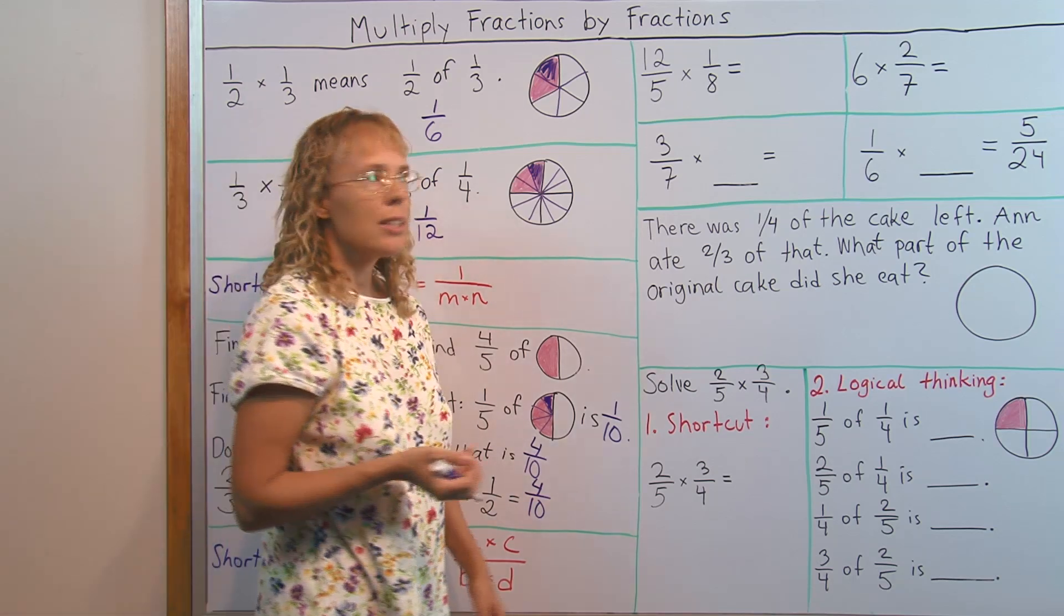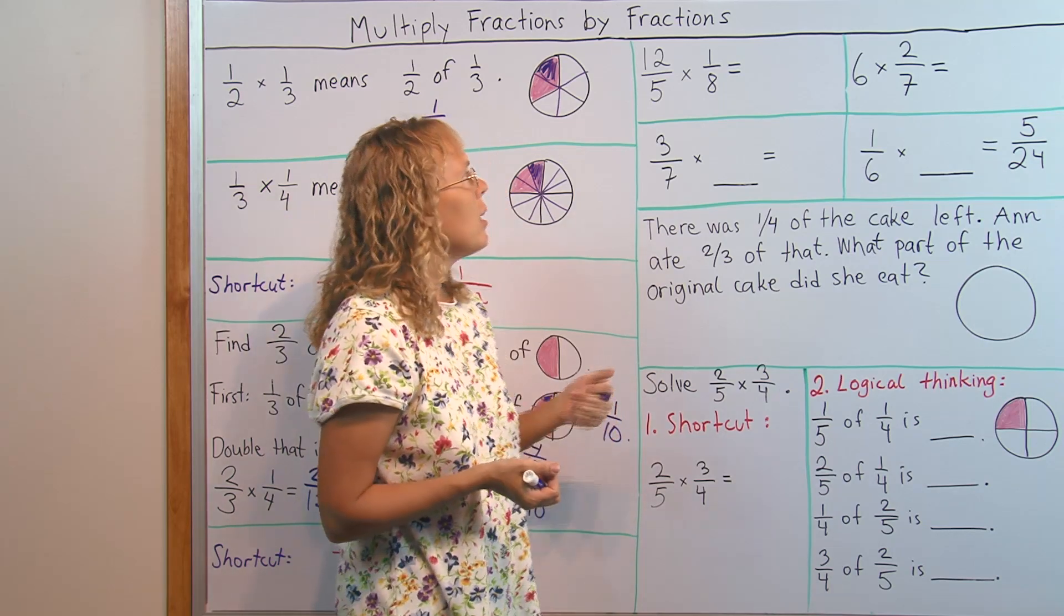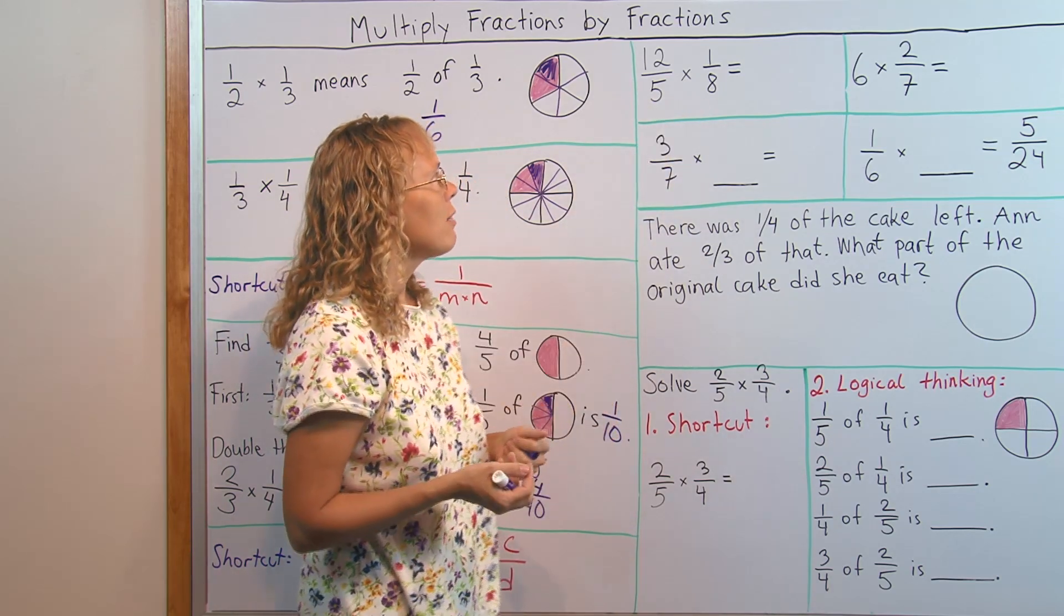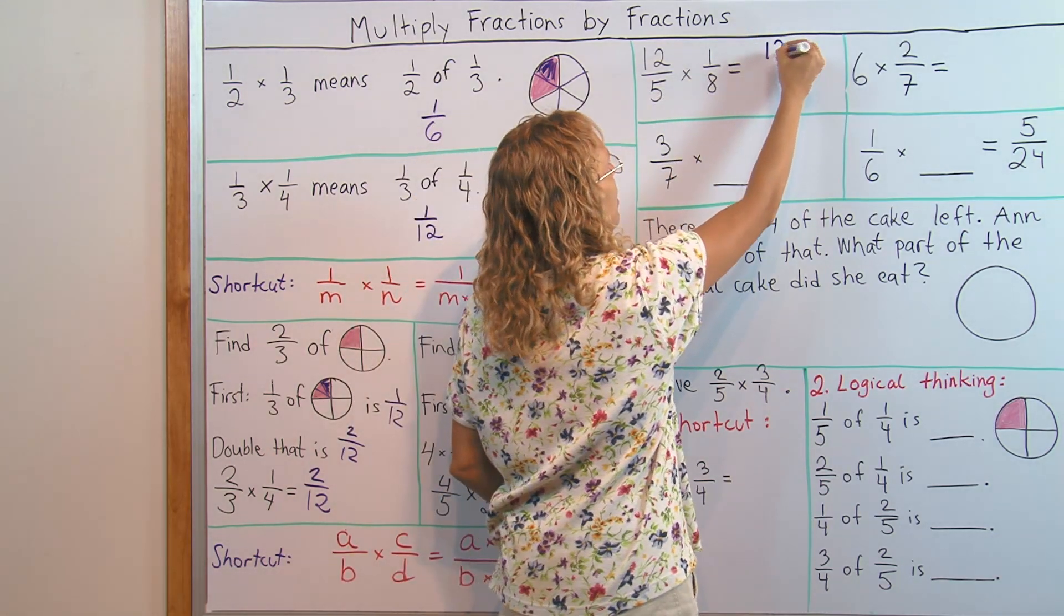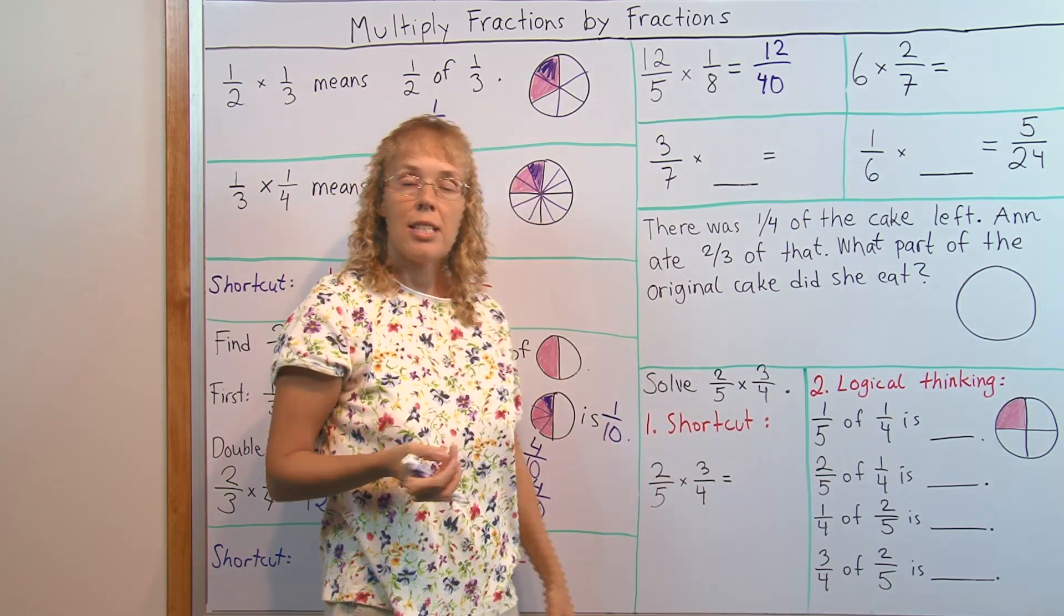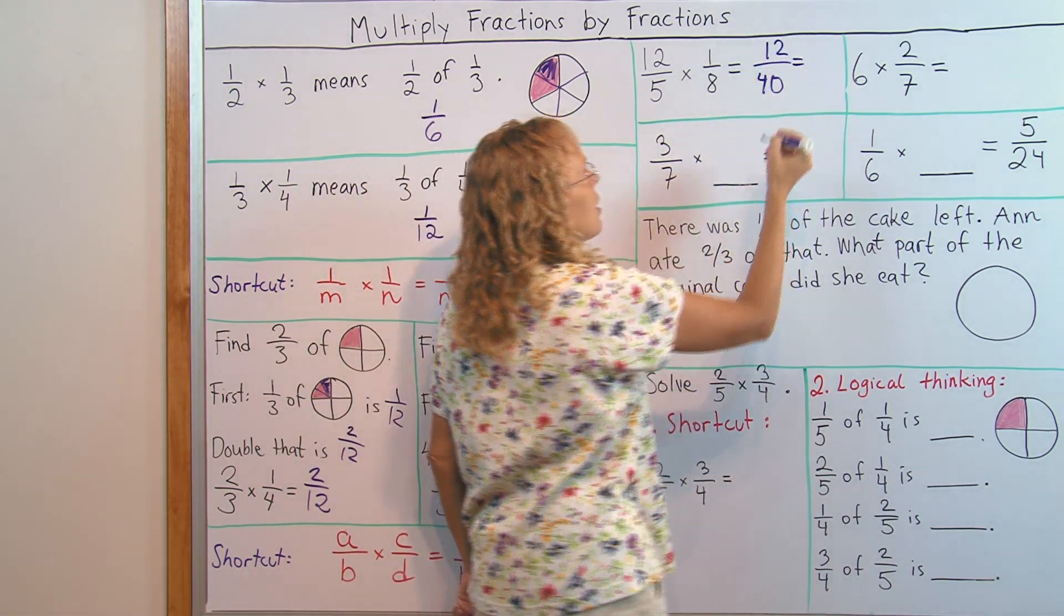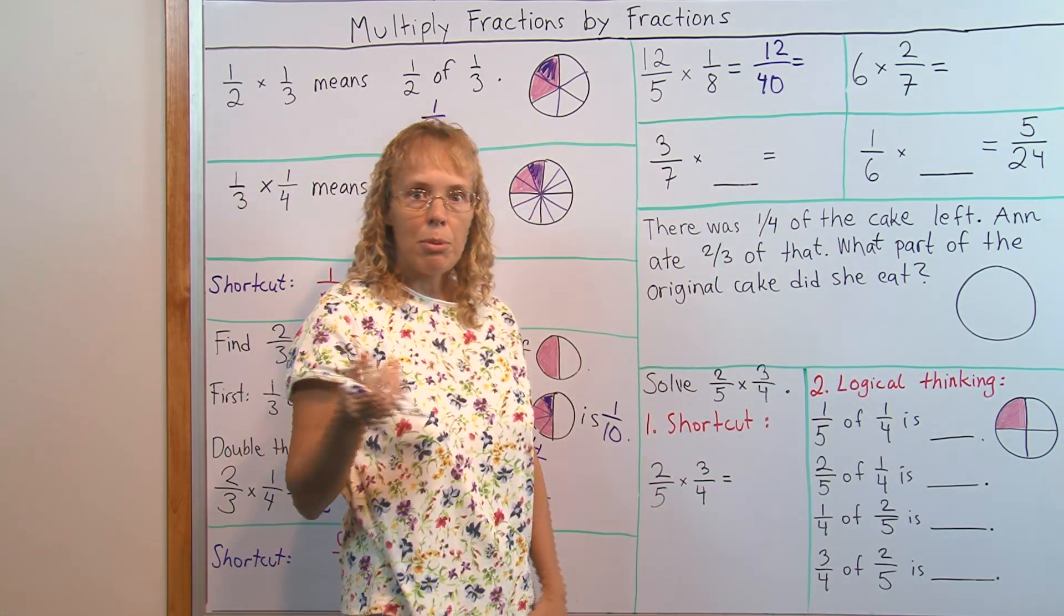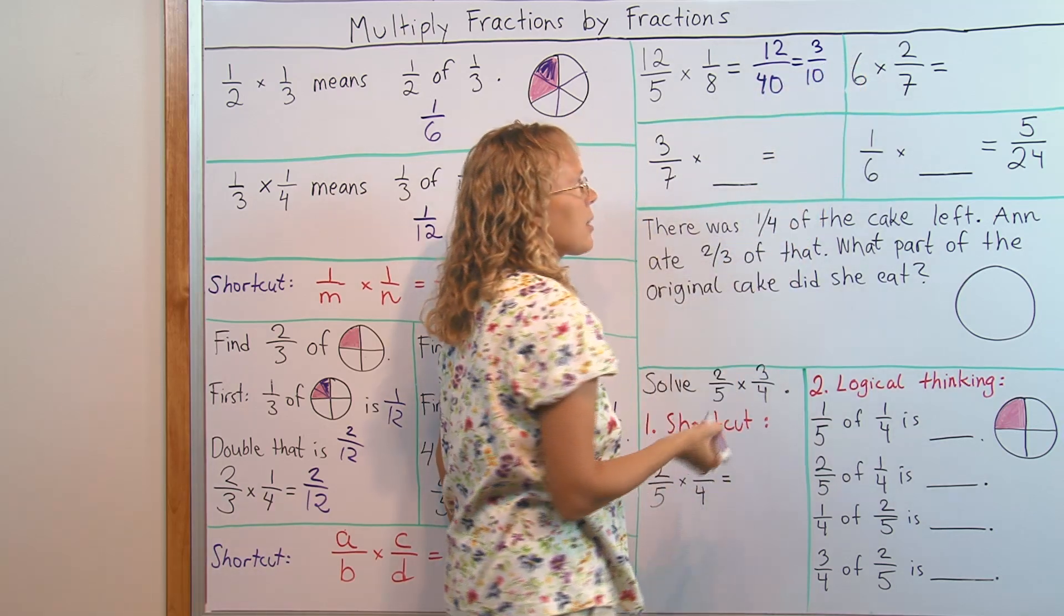Then it's time to practice with just multiplication problems without any visual models. Here's one of them: 12 over 5 times 1 eighth. We go 12 times 1 equals 12 and then 5 times 8 equals 40. Now, you need to notice that this fraction simplifies. Can't leave it like that. Both 12 and 40 are divisible by 4, so we will get 3 over 10, 3 tenths.